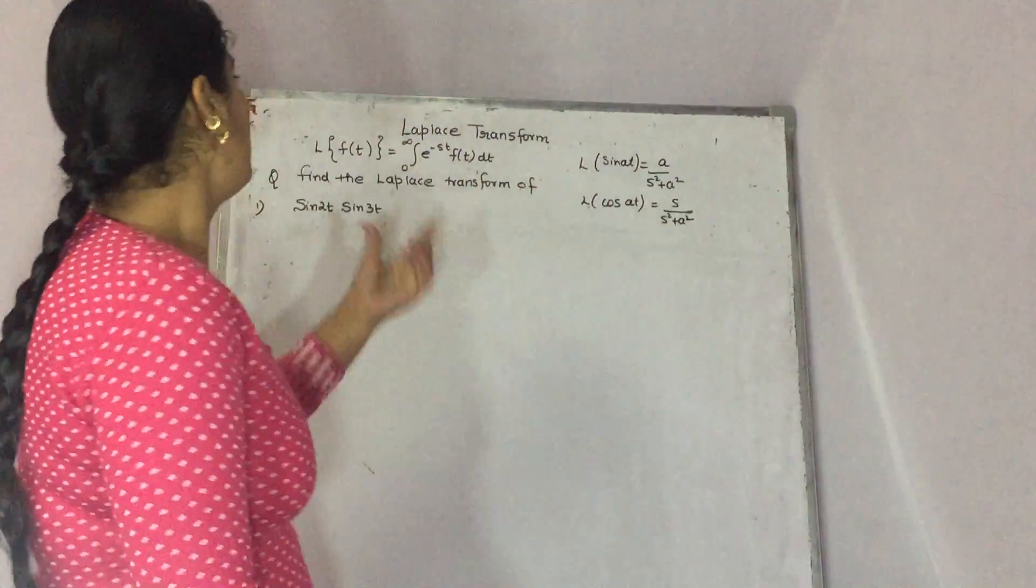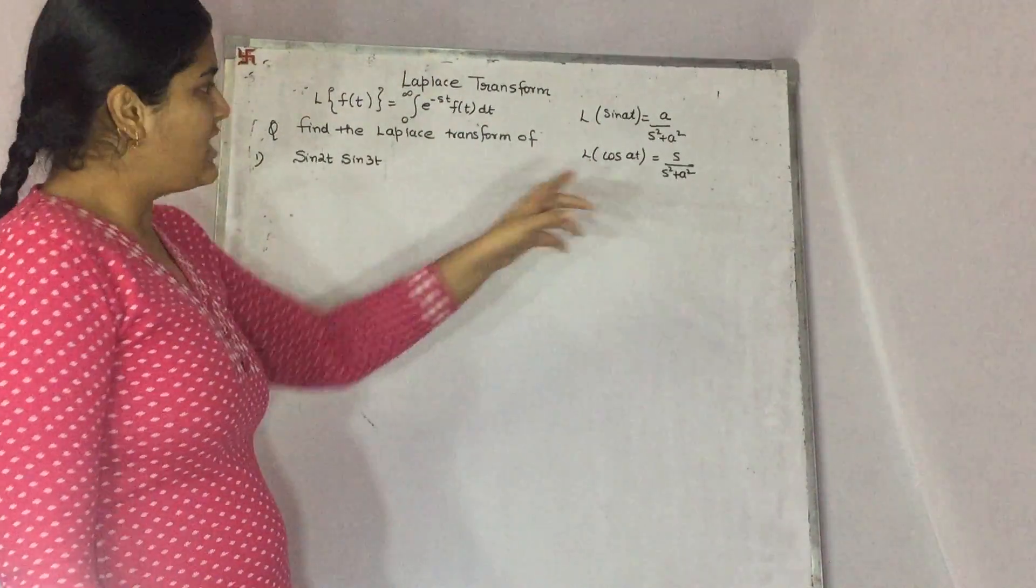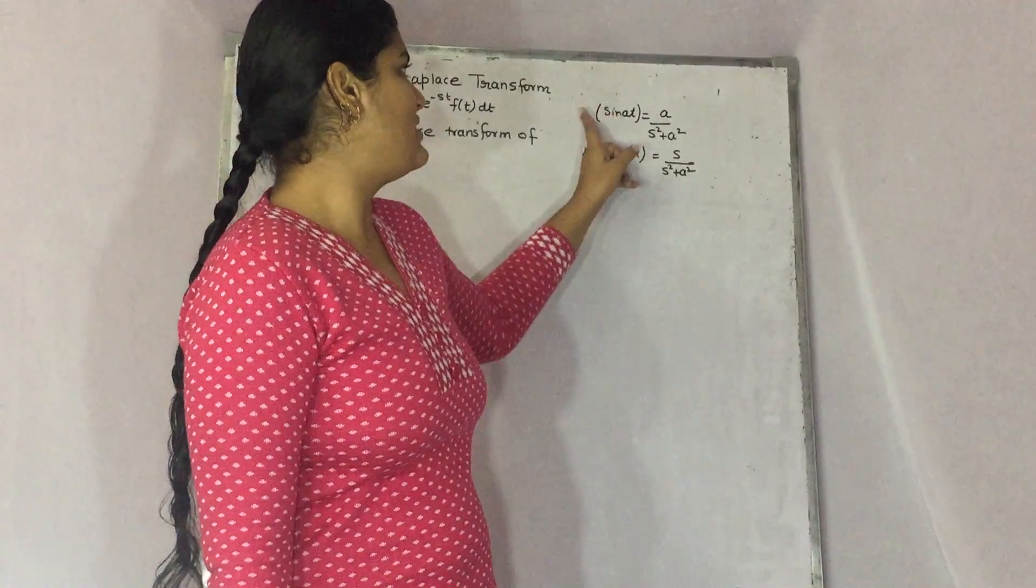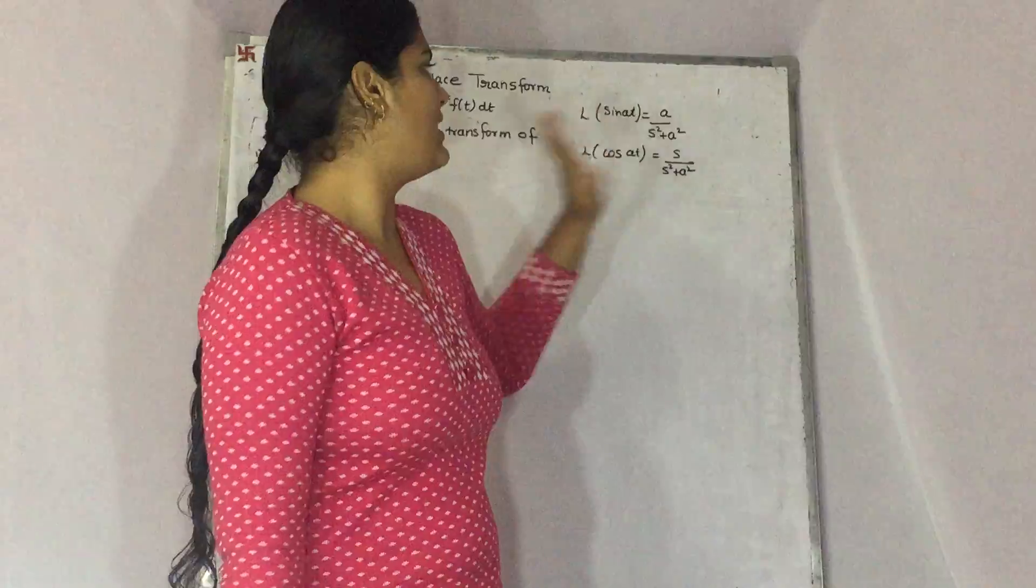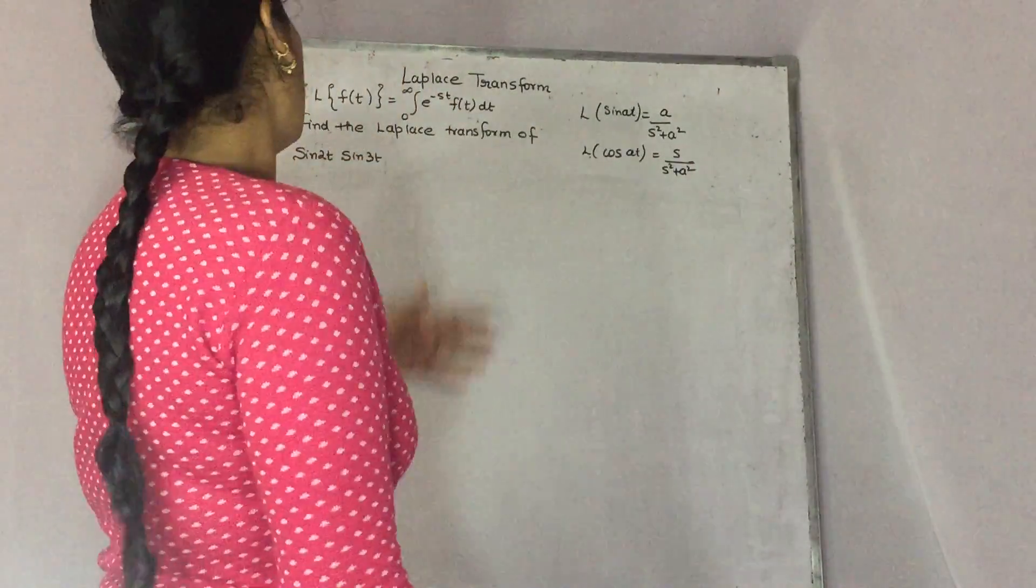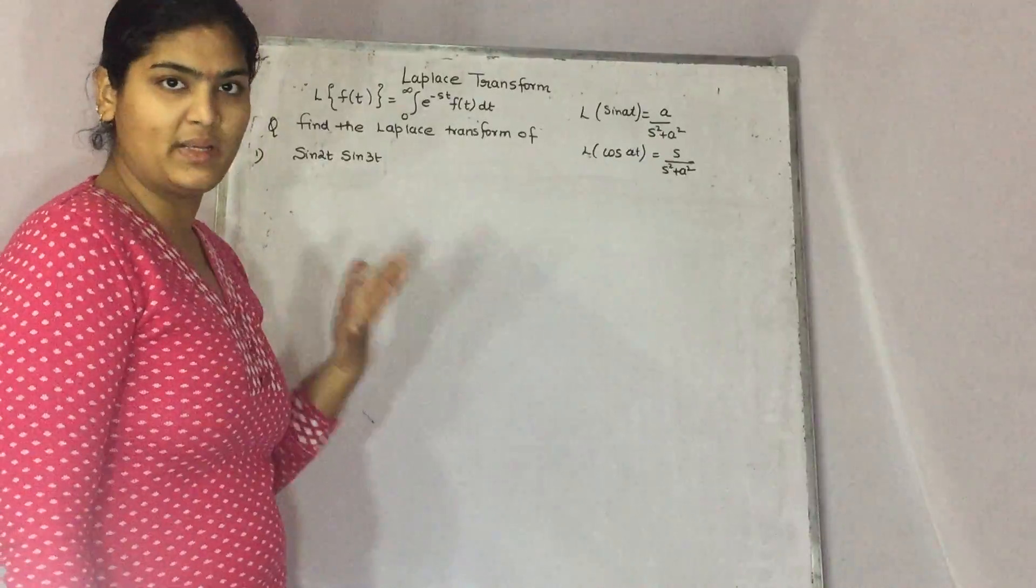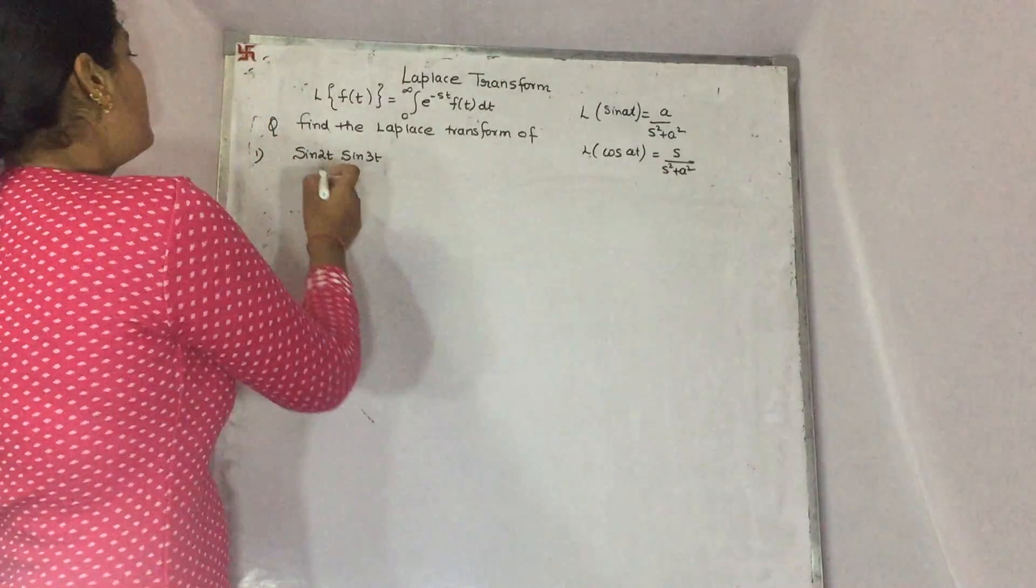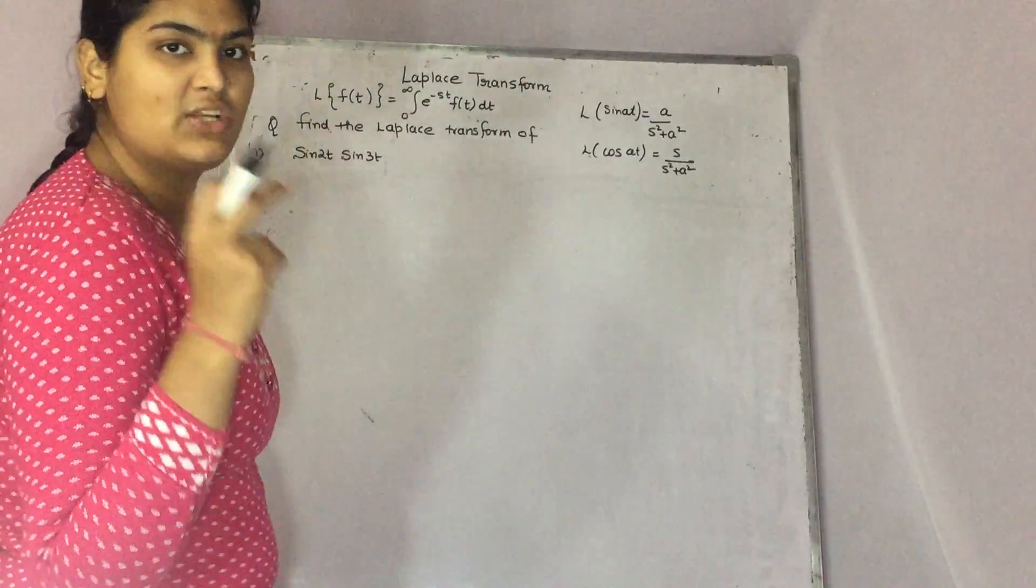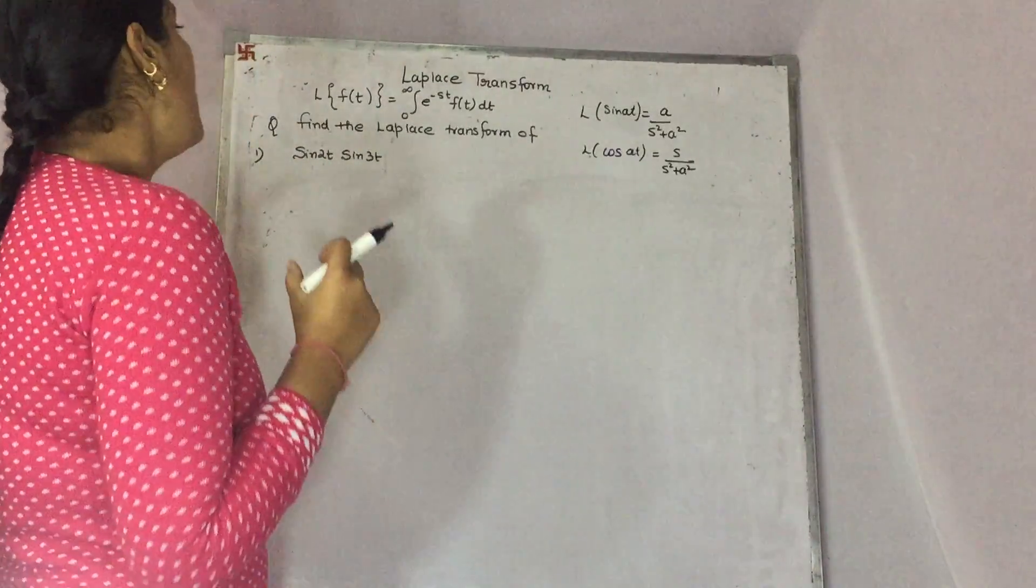This is the formula for Laplace transformation. There are many formulas, like if you have to find the Laplace transform of sine at, then it will be like this. For cosine, like this. And there are many formulas. How can we apply these formulas into a particular equation? Here's a question: you have to find the Laplace transform for this particular function.